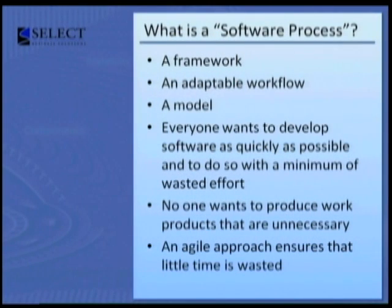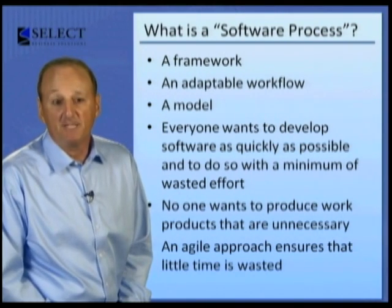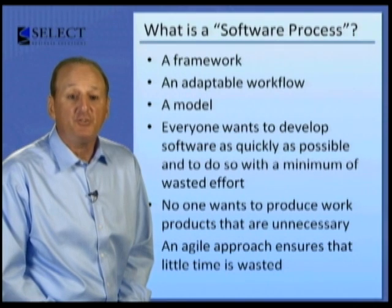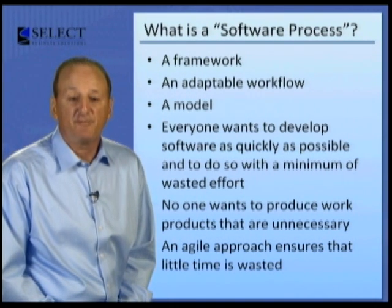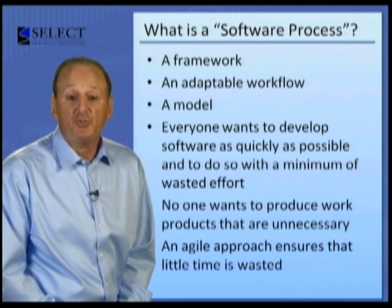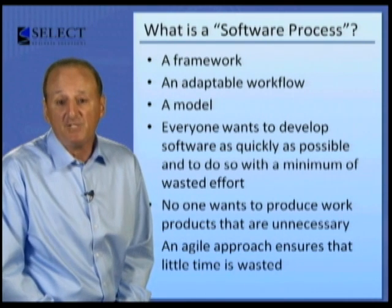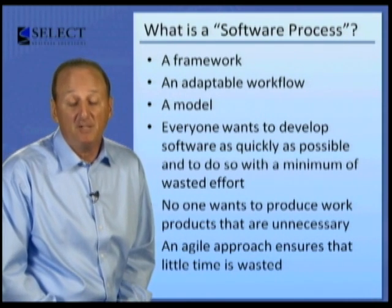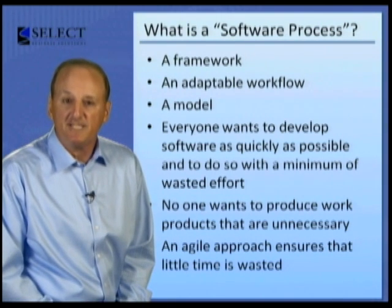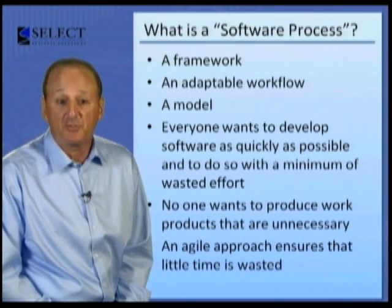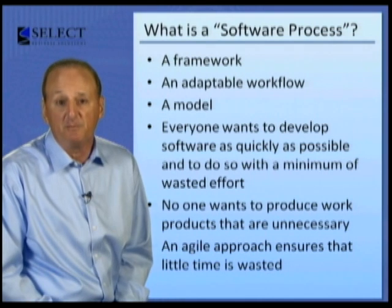Let's begin by identifying just what a software process really is. A software process has three fundamental elements that each contribute to the roadmap. The first is a framework, which is chosen by software engineers as they build computer software. The framework helps to establish a consistent and disciplined approach to the development of computer software.